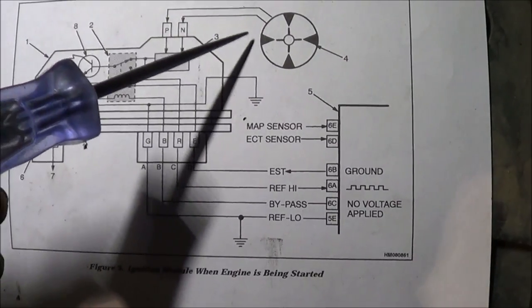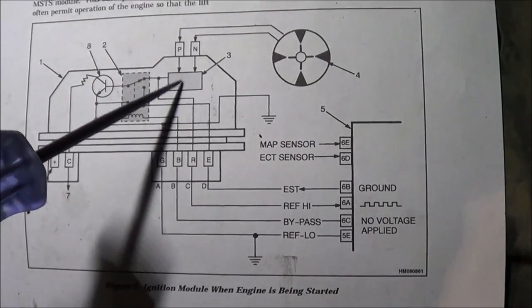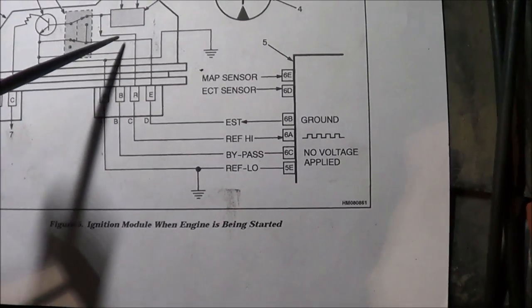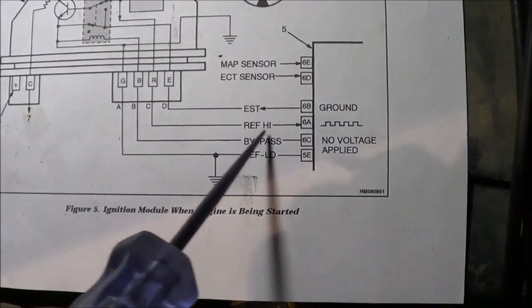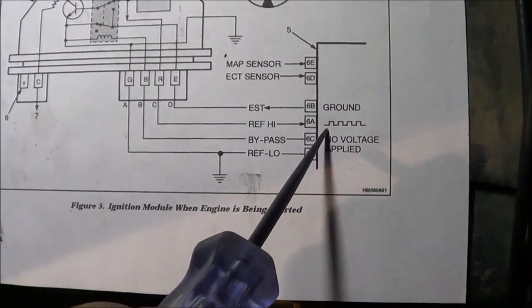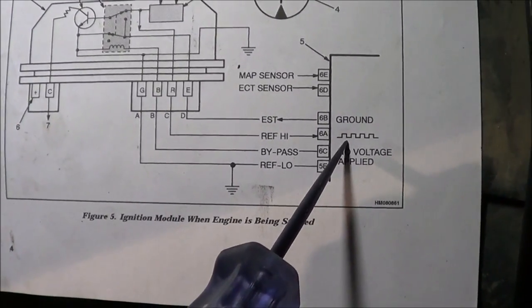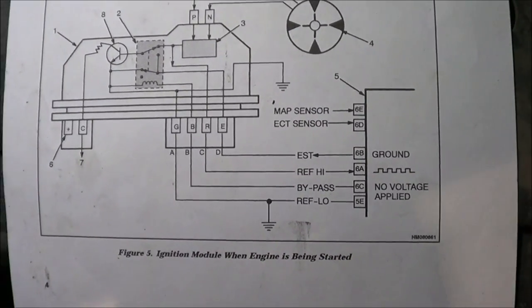The AC signal coming out of that reluctor would enter the ignition module, and this would convert it into a square wave signal that it would pass through to the ECM through the reference high circuit or line. The ECM is going to measure those pulses.